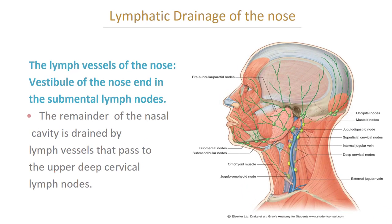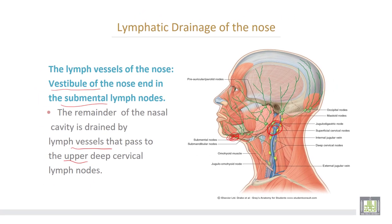Lymphatic drainage of the nose: the lymph vessels of the nose start from the vestibule of the nose and end in the submental lymph nodes. The remainder of the nasal cavity is drained by lymph vessels that pass to the upper deep cervical lymph nodes.